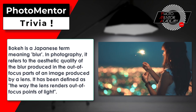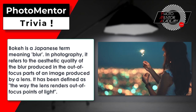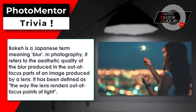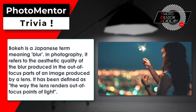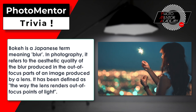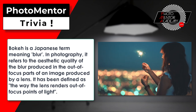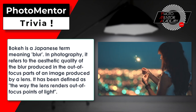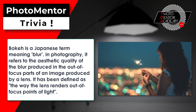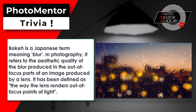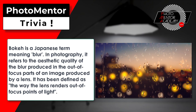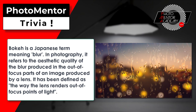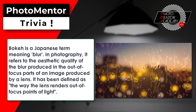B is the answer. Bokeh is a Japanese term meaning blur. In photography, it refers to the aesthetic quality of the blur produced in the out-of-focus parts of an image produced by a lens. It has been defined as the way the lens renders out-of-focus points of light.